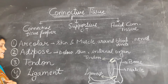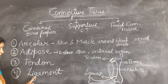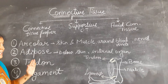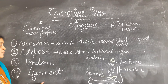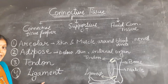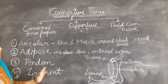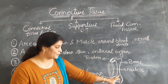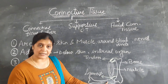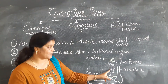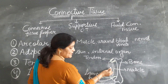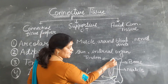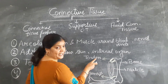Next is tendon and ligament, which is a very important topic. A commonly asked question is: what is the difference between tendon and ligament? Here you can see a bone and a muscle — the bone and muscle are joined by tendon.